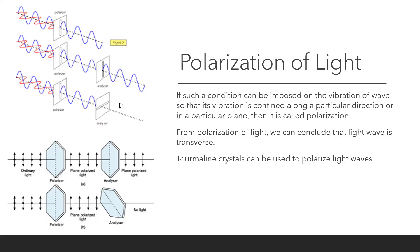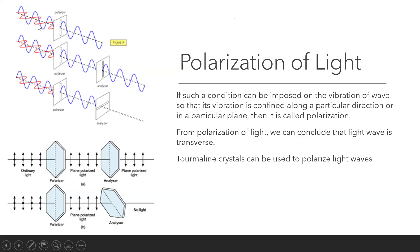So that is called polarization. If such a condition can be imposed on the vibration of a wave so that its vibration is confined along a particular direction or in a particular plane, then it is called polarization. When the string, which was vibrating in both directions, passed through the polarizer, it gets vibration only in one direction or in one plane — this is a polarized wave.